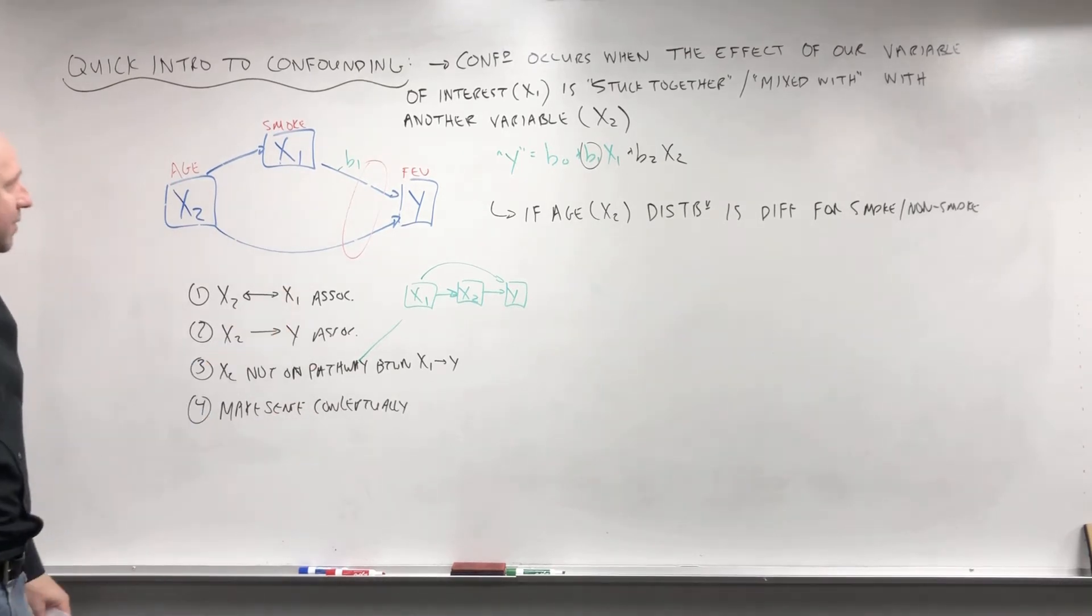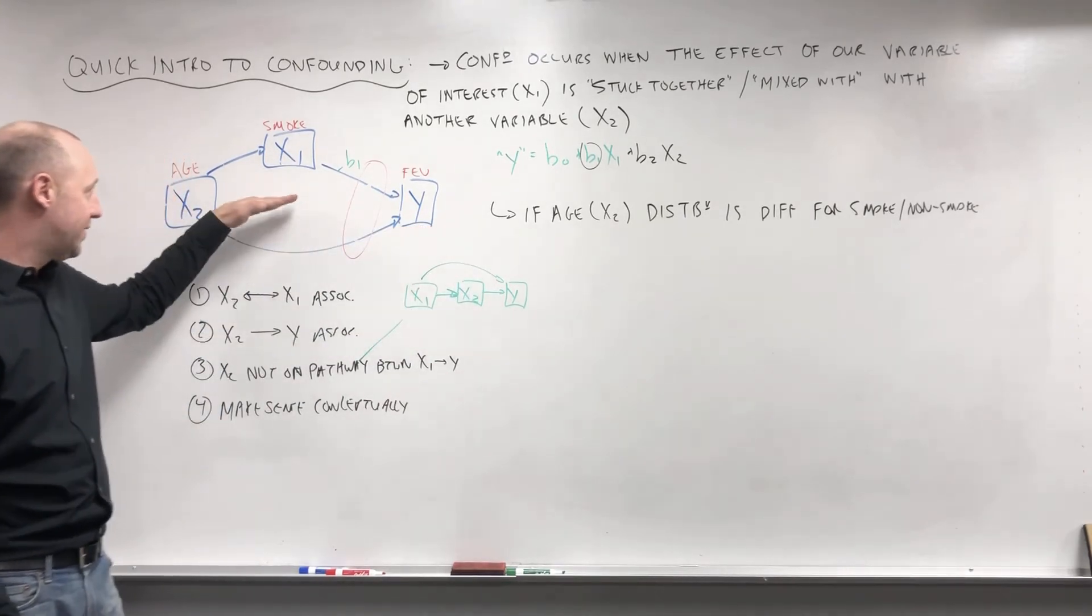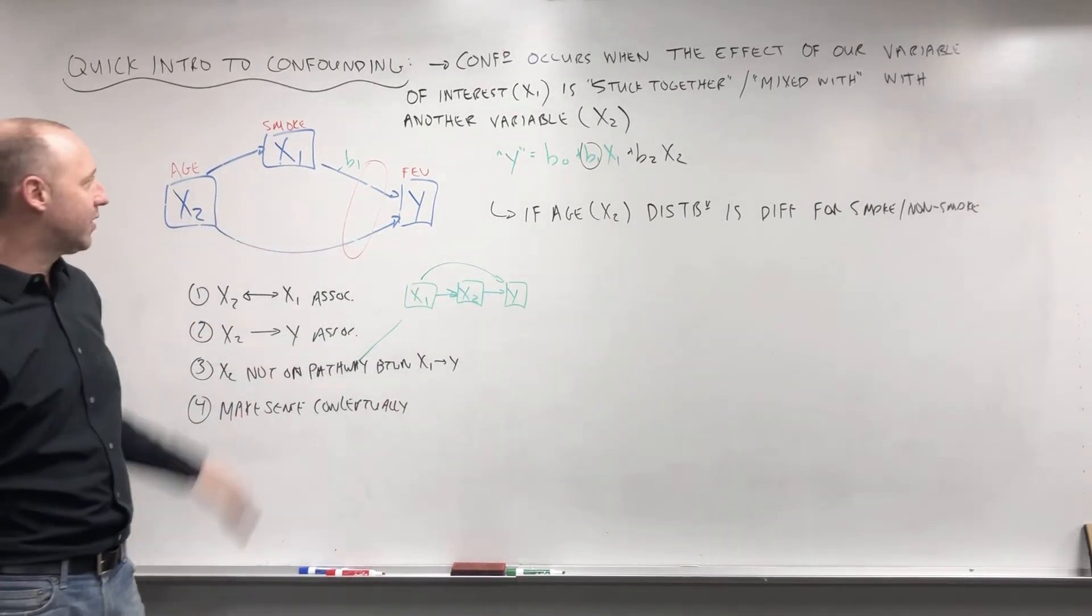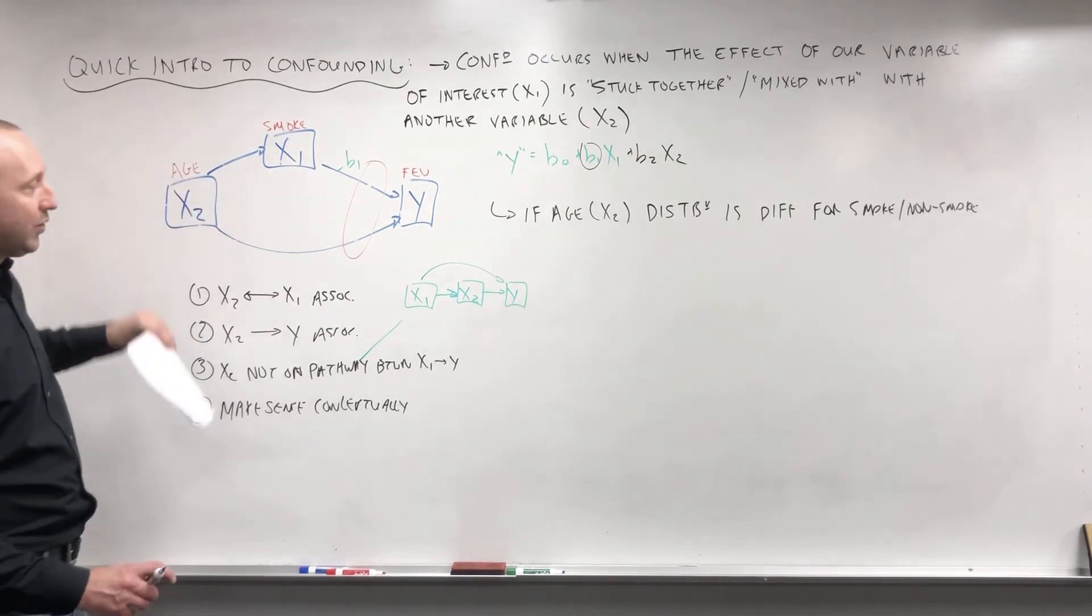So this is the concept or the idea of confounding. We're going to look at this particular example in R, and we're going to see how things look when we don't include age and when we do include age, what seems to happen.